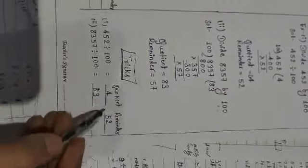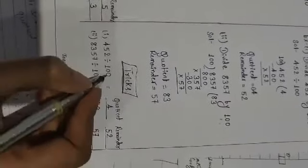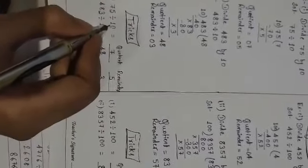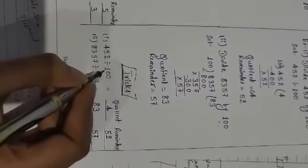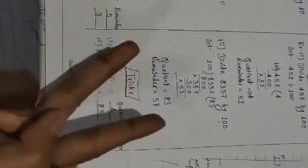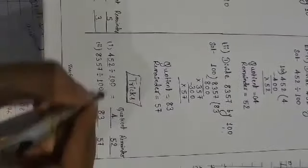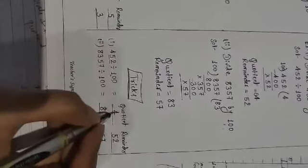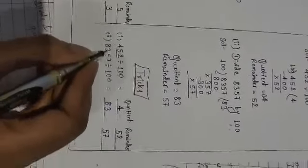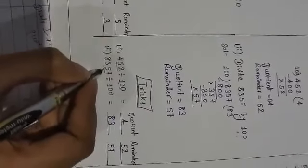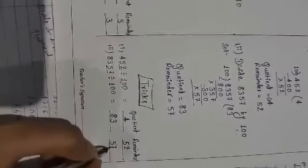What I told you here, the number of zeros. In 100 how many zeros are there? Two. So the last two digits is your remainder and rest of the digits will be the quotient. As in this there are four digits, the last two digits is 57, so 57 is your remainder and 83 is the quotient.